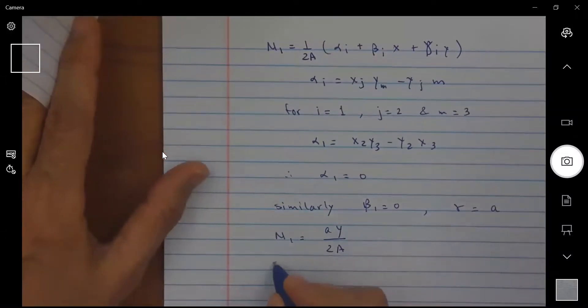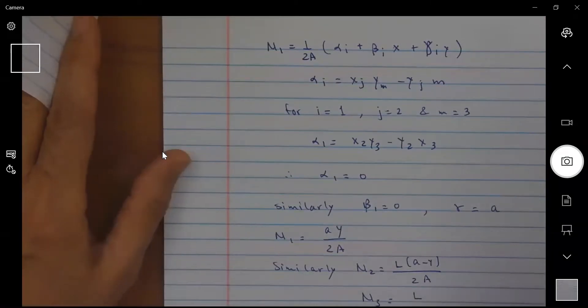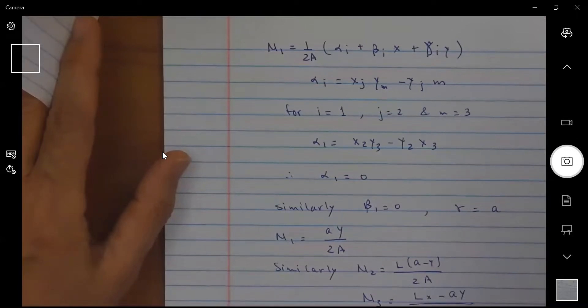We can also show similarly that N 2 is equal to L times A minus Y divided by 2A, and N 3 is equal to L times X minus A times Y divided by 2A.